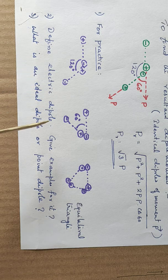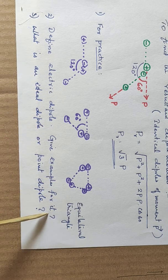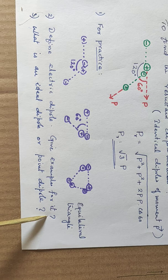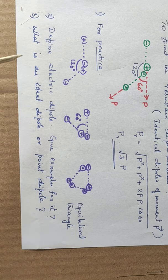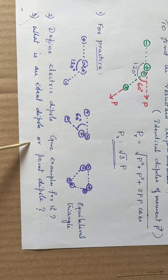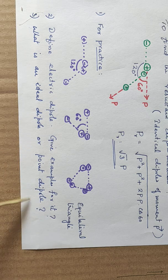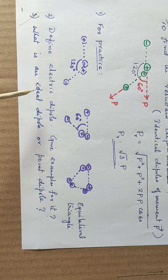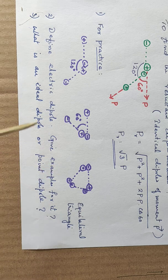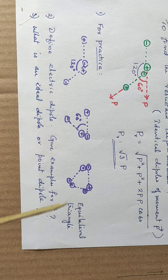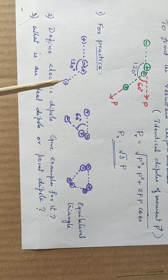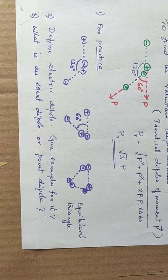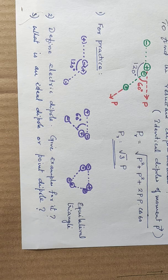Then the second question is, define electric dipole. Give example for it. You have to find the example for electric dipoles. Then what is an ideal dipole or point dipole? This is very specific question that you all must understand. So refer the textbook and find out the answers for all this. Do practice it and do the assignment and send it to me. Okay. Hariwama.